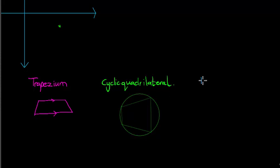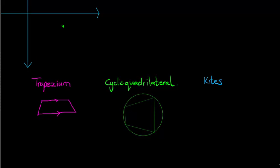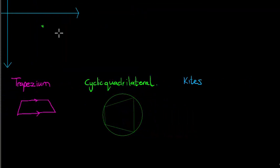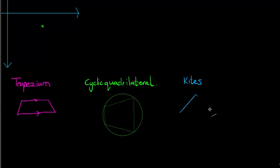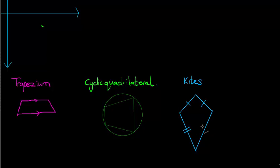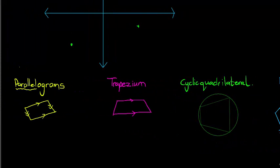We also get kites, and a kite is on its own category. A kite has the following property: the adjacent sides are equal to each other. So these two adjacent sides are equal and those two adjacent sides are equal.